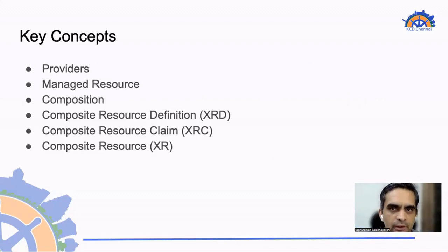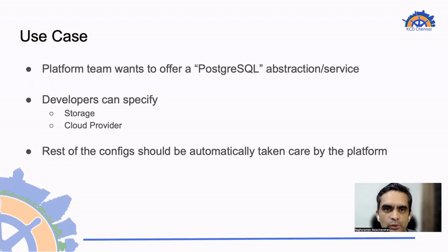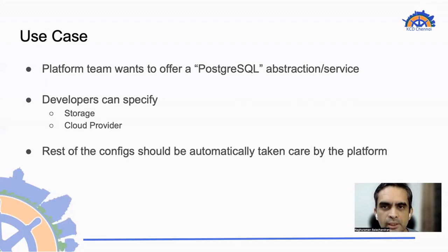Let's dive a little bit deeper into Crossplane. At a high level, there are six major building blocks that Crossplane offers. We will dive into each one to understand what they are and how we can use them to compose our infrastructure. Before diving into those concepts, let's look at a simple use case: a platform team wants to offer a simple PostgreSQL service or abstraction, where the service takes care of a lot of configurations, and developers simply specify the required storage and which cloud provider they want the PostgreSQL instance created in. The rest of the configurations will be automatically handled by this particular PostgreSQL abstraction.